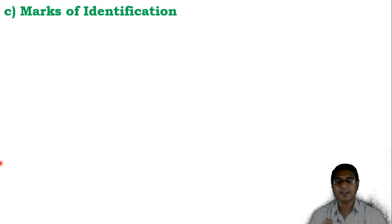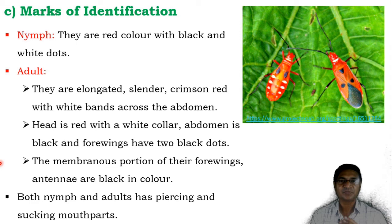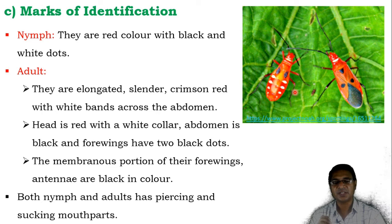Moving toward the marks of identification: the nymphs are generally red in color with black and white dots. The black dots and white dots on the abdominal region are observed in the nymphal stage.